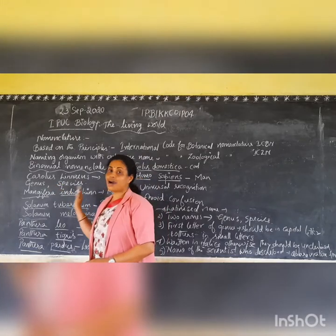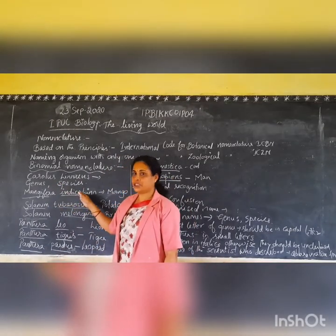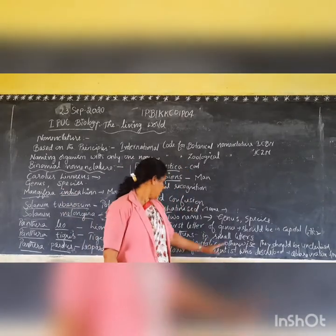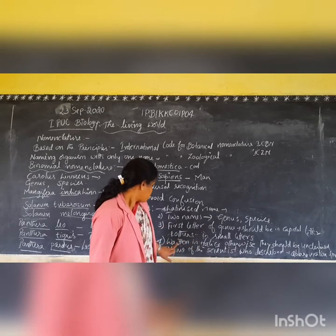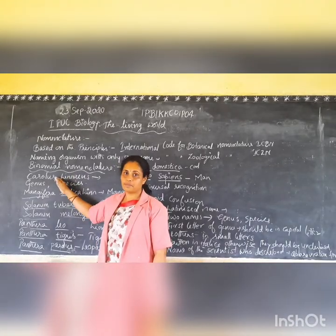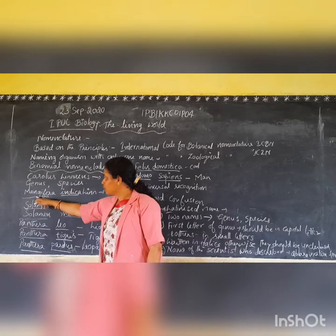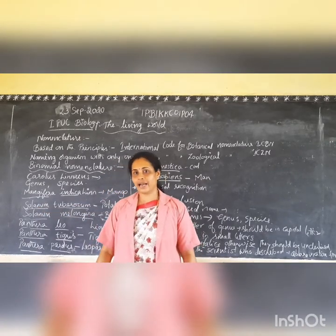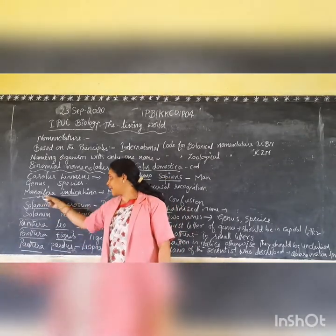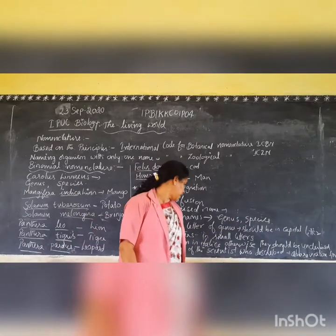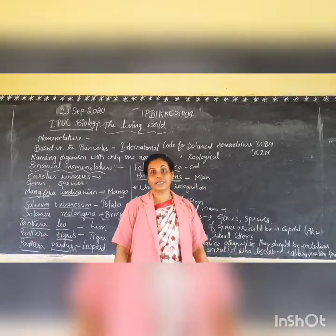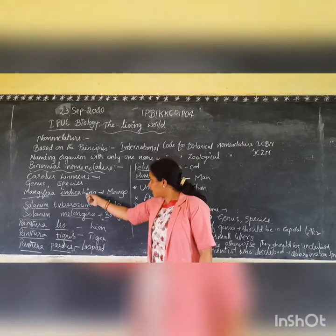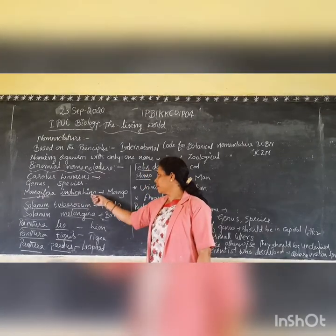The remaining letters — both in the genus and species names — are written in small letters. Only the beginning of the genus name is in capital. All the scientific names are written either in italics or they are underlined separately. These two names or words are underlined separately. If printed, they appear in italics. The name of the scientist who first described and gave the scientific name to the species is also written at the end in abbreviation form.